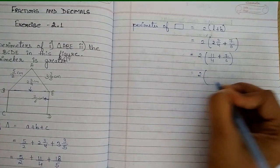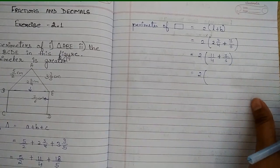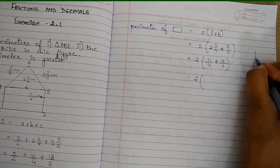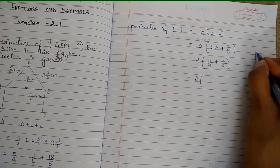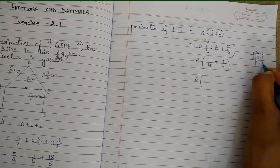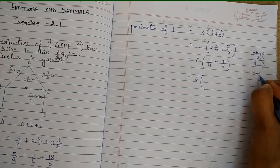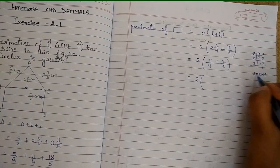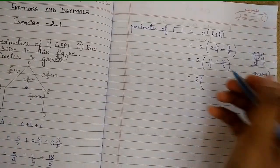Now we need a common denominator for 4 and 6. We take LCM of 4 and 6. LCM: 2 into 2 into 3 — 2 times 2 is 4, times 3 is 12. So LCM is 12.